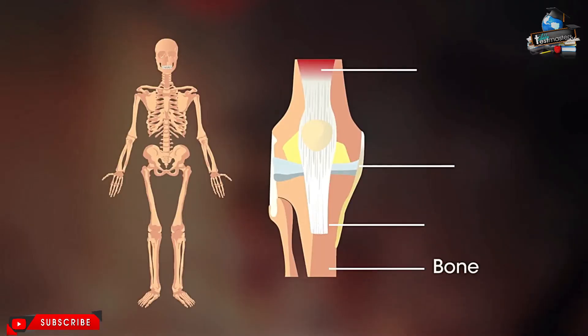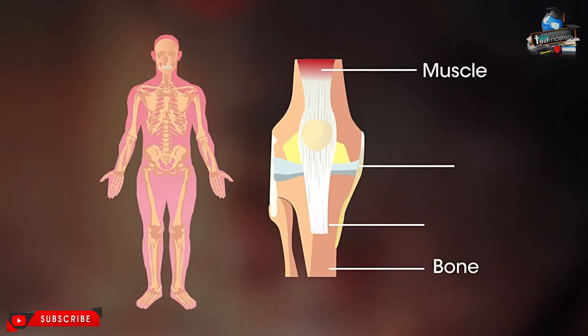We are a perfect combination of bones, muscles, joints, tendons and ligaments all working together to help us move.